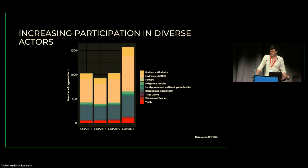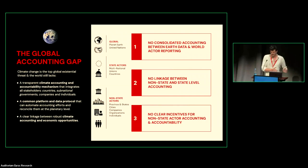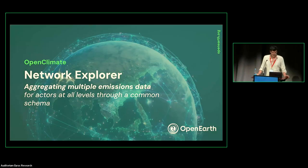Even though many different actors have appeared in the space, we still haven't had much luck — these diverse actors haven't actually been coordinating. That's what we call the global accounting gap: trying to see how we can coordinate the global accounting process to make sure we can actually coordinate toward our goals. We see three main issues: first, there's no consolidated accounting between Earth data and what different world actors are reporting.